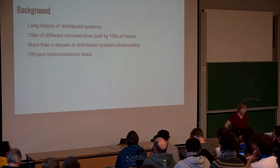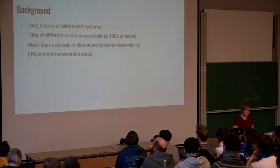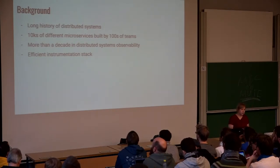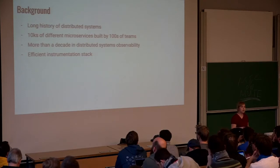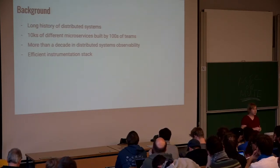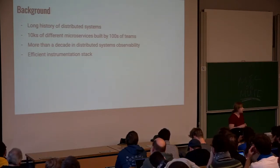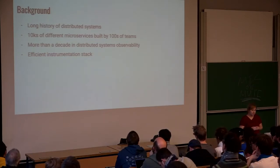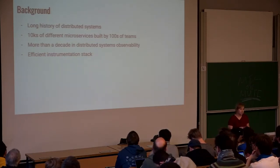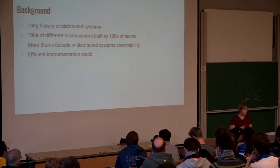To give you a little bit of history, Google is dominantly a distributed systems company. One of the most common architectural patterns we use is microservices architecture. We have 10,000s of different microservices contributed and maintained by hundreds of different teams. And being able to observe our system is a fundamental reason why Google is reliable, fast, and user friendly.